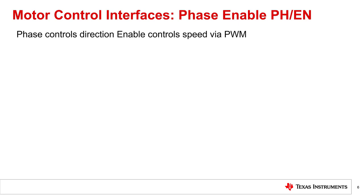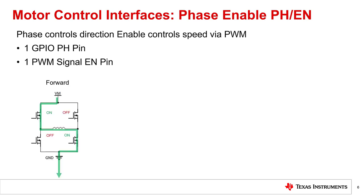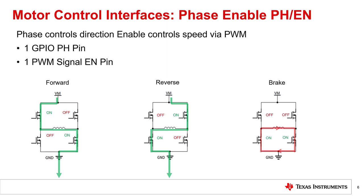Let's begin with phase-enabled. With phase-enabled interface, you need only one GPIO pin and one PWM signal to drive a motor. The phase pin condition, whether high or low, will control the direction in which the motor spins. The enable pin will be driven by a PWM signal that will control the speed at which the motor rotates. With phase-enabled interface, the user typically has access to forward, reverse, and brake functions. However, coast functions with fast decay are typically not available through this interface.